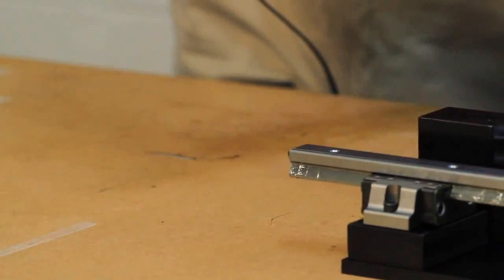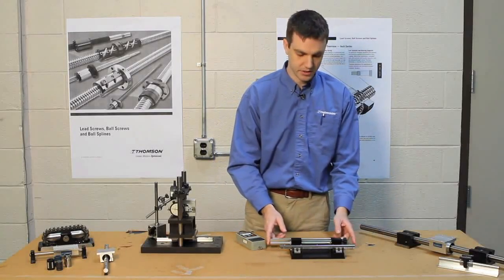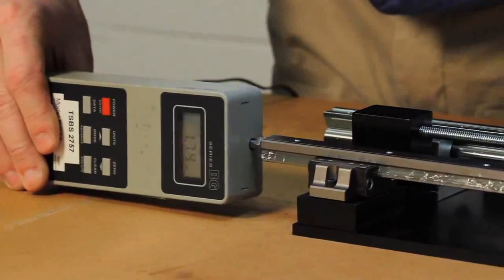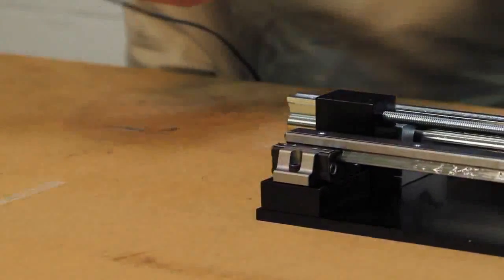Okay, so the peak force is 0.14 pounds. So that's very low. You can see that this moves very easily. So compare that to a square rail, peak force of 2.08.